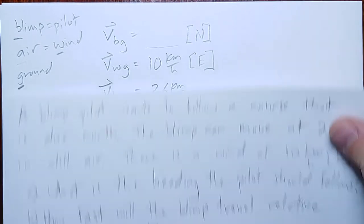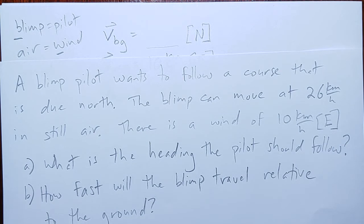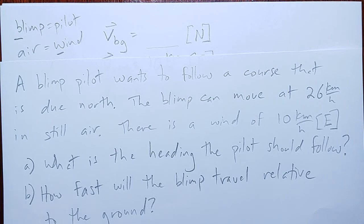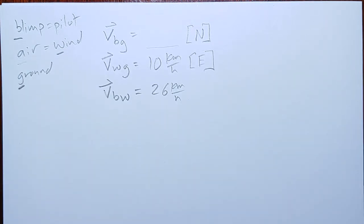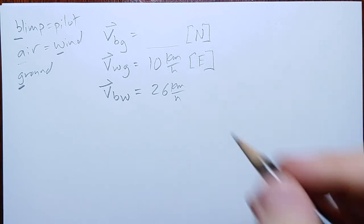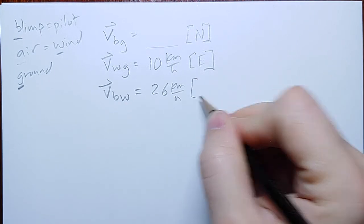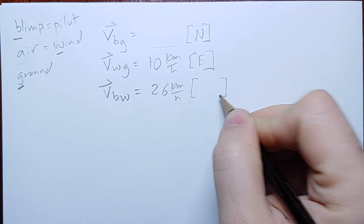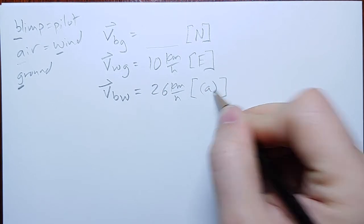And we don't have direction because it just says that, you know, that's how fast the blimp moves through the air, but it doesn't say what direction it's pointing. I want to know what heading should the pilot follow. So, the heading is the angle the vehicle is pointing, which is also the direction it moves relative to the medium it is moving through. And so, this is what we are looking for in part A.